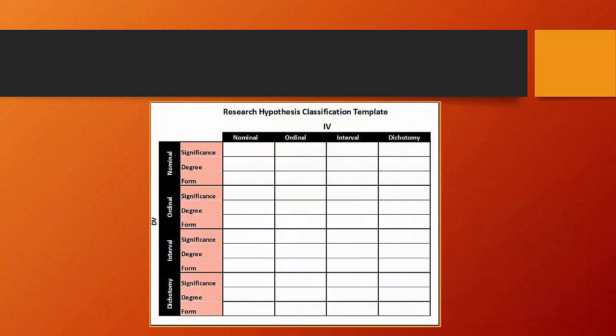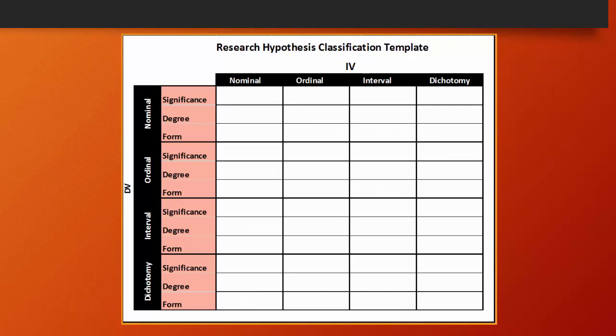What's going to happen throughout the remainder of the course is we're going to examine various levels of measurement and the tests that we can perform on those levels of measurement, relative to whether the independent and dependent variable are measured at the nominal, ordinal, interval ratio, or dichotomous level of measurement.